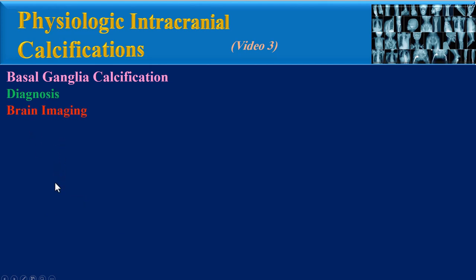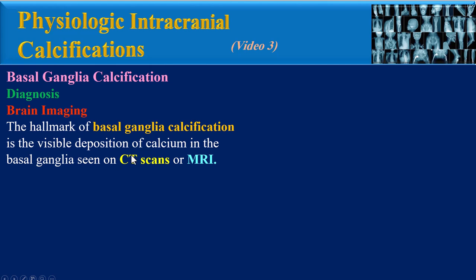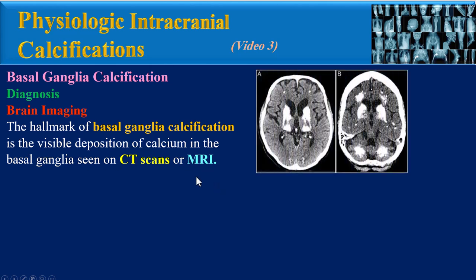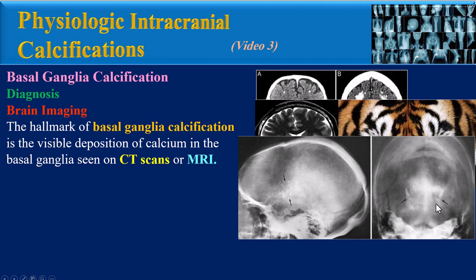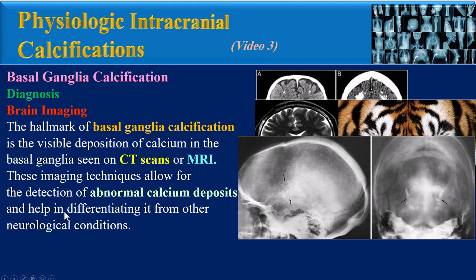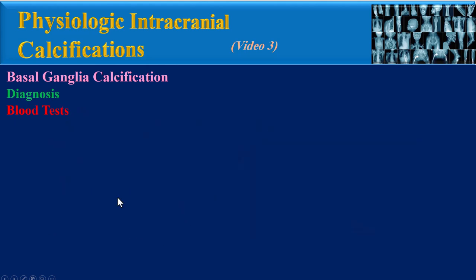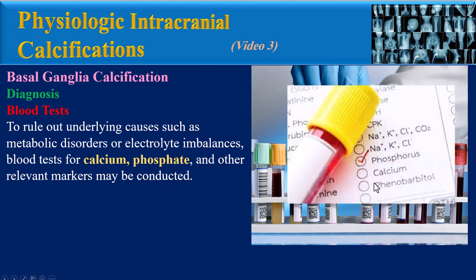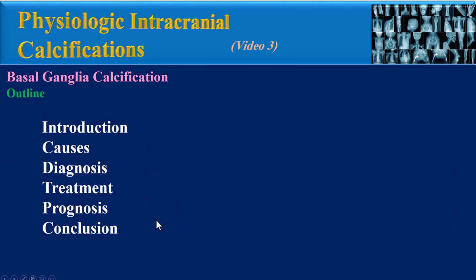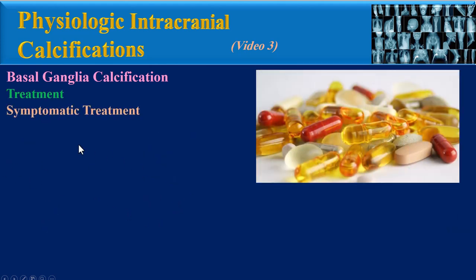This is a patient with developmental venous anomaly causing birth hypoxia and basal ganglia calcification. For diagnosis, brain imaging plays a crucial role. The hallmark of basal ganglia calcification is the visible deposition of calcium seen on CT scan or MRI, though it can sometimes also be seen on plain skull radiograph. Blood tests to rule out underlying causes such as metabolic disorders or electrolyte imbalances — including calcium, phosphate, and other relevant markers — may also be conducted.